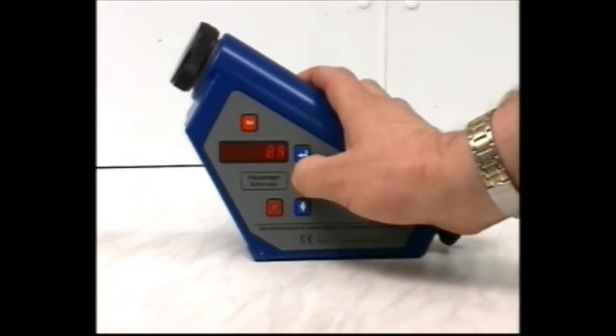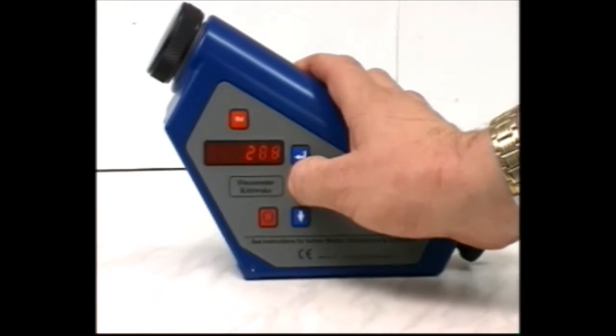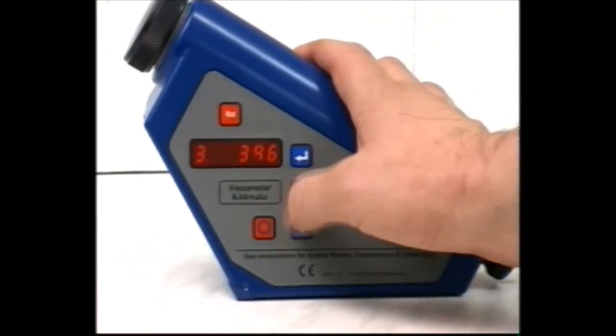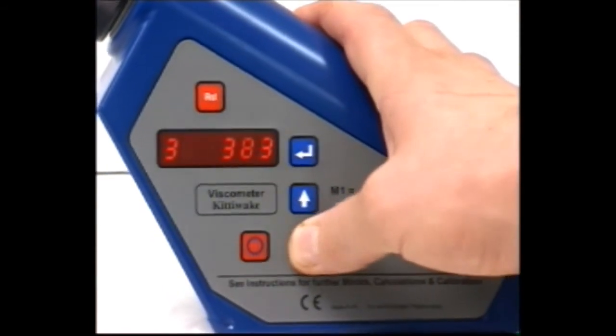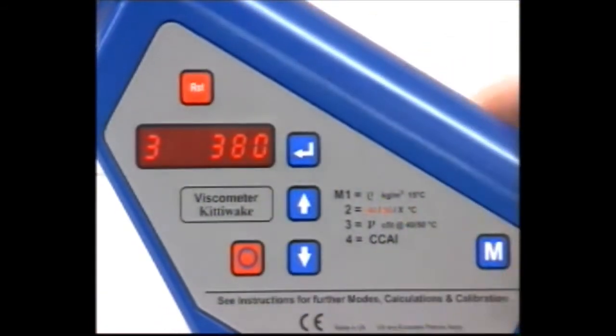In mode 3, display the last recorded viscosity. This can be altered using the speed and arrow keys. Go to mode 4 to display the CCAI.